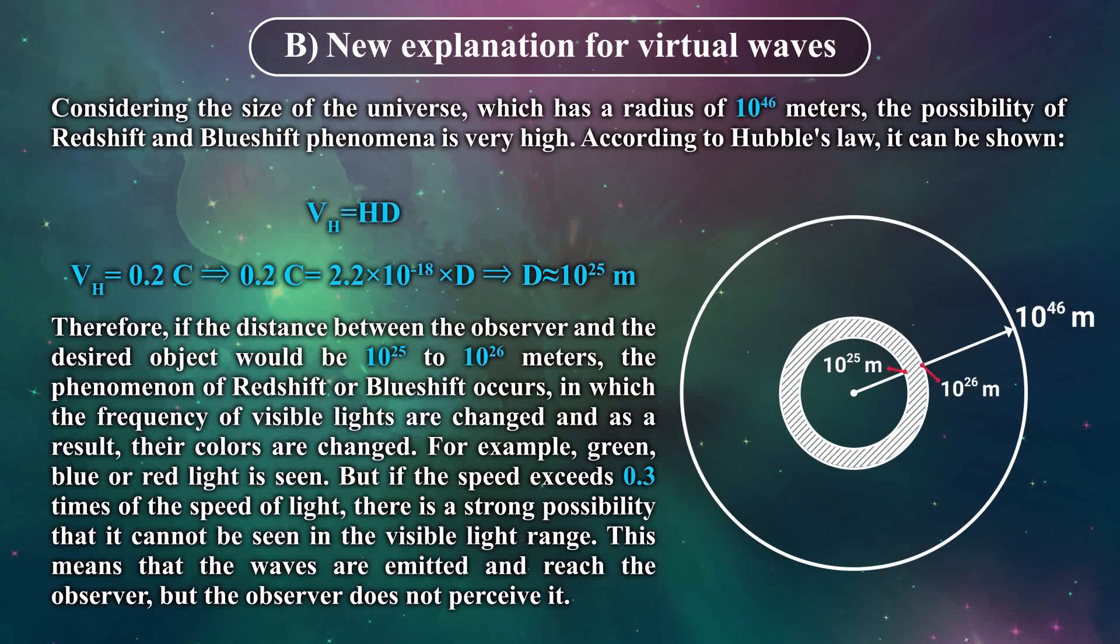According to Hubble's law, if the distance between the observer and the desired object would be 10 to the power of 25 to 10 to the power of 26 meters, the phenomenon of redshift or blueshift occurs in which the frequency of visible lights are changed and as a result their colors are changed. For example, green, blue or red light is seen, but if the speed exceeds 0.3 times of the speed of light, there is a strong possibility that it cannot be seen in the visible light range. This means that the waves are emitted and reach the observer, but the observer does not perceive it.